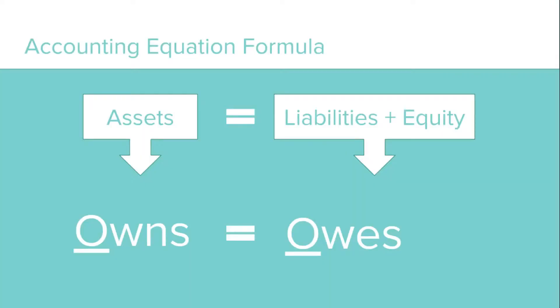So what do I mean by O? All the things that you own equals all the things that you owe. That is what the one alphabet O means — there's an O on both sides: own and owe. If you'd like to learn more about assets and liabilities, check out my other videos linked in the description.